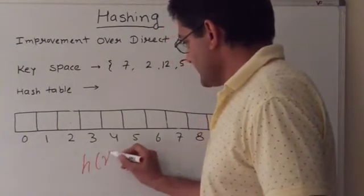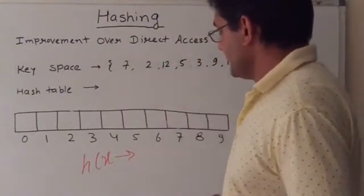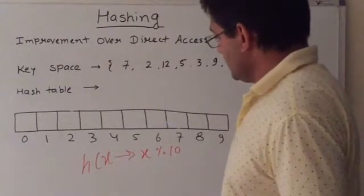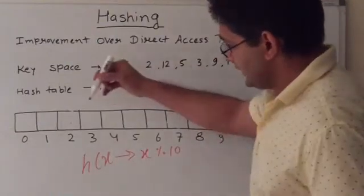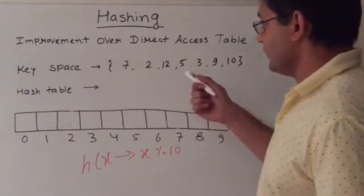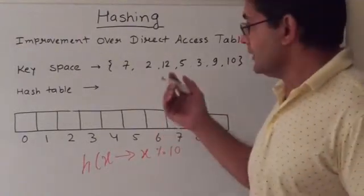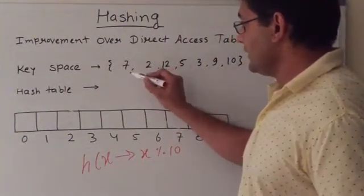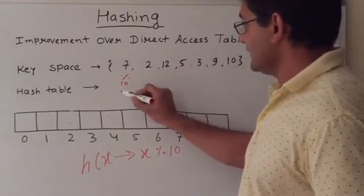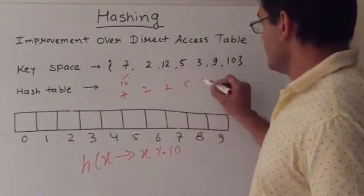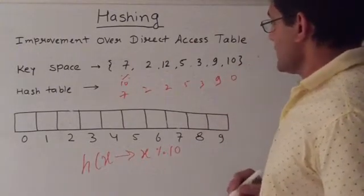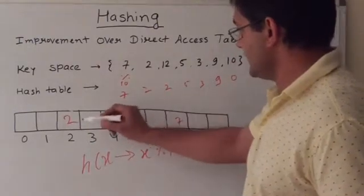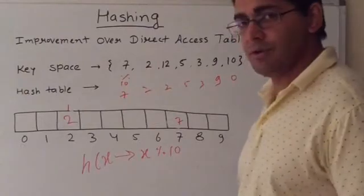Let's improve our hash function h in order to get a smaller value for a key. Let's say we mod our key by 10. Then we can use the smaller table indexing from 0 to 9 for any number of values in the key space. No matter how big the value is, we can fit it in this smaller table. Now we mod each element of the key space by 10 and get results 7, 2, 2, 5, 3, and 0. That means 7 goes at index 7, 2 goes at index 2, and 12 also goes at index 2. But there is already a value at index 2 — this is called a collision.